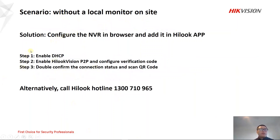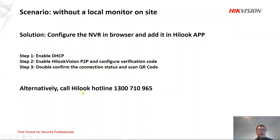There are three steps. We enable DHCP in the browser and enable P2P. Then configure the verification code, confirm the connection status, and scan the QR code. If you find the browser configuration too complicated, you can call Hyluk online to finish it.